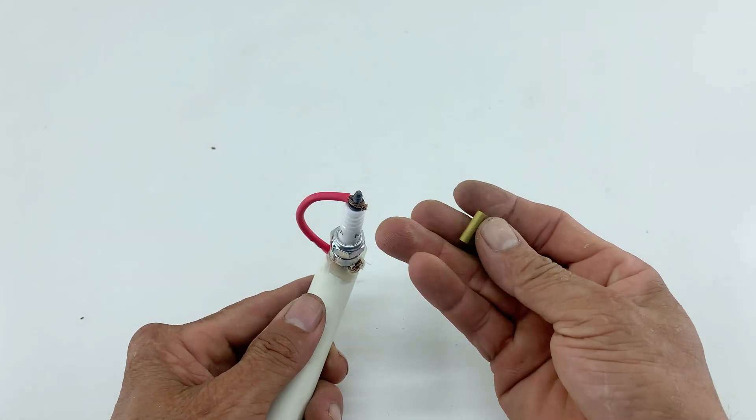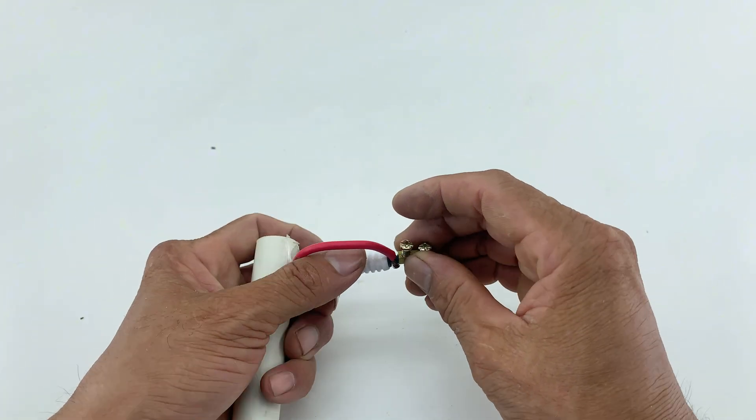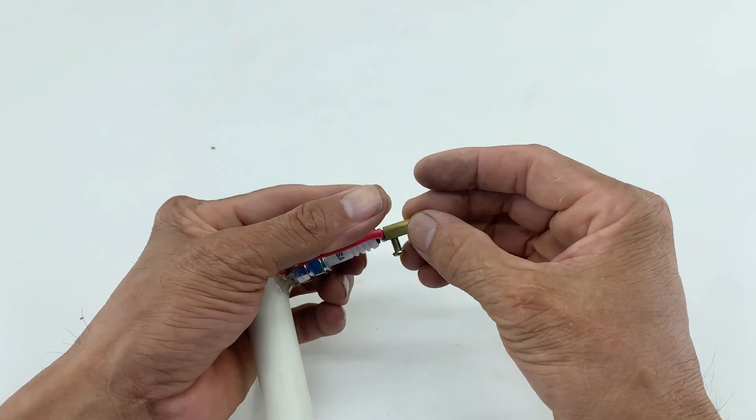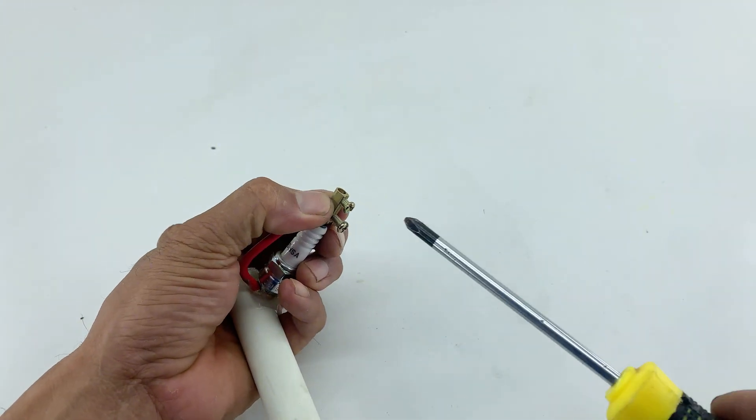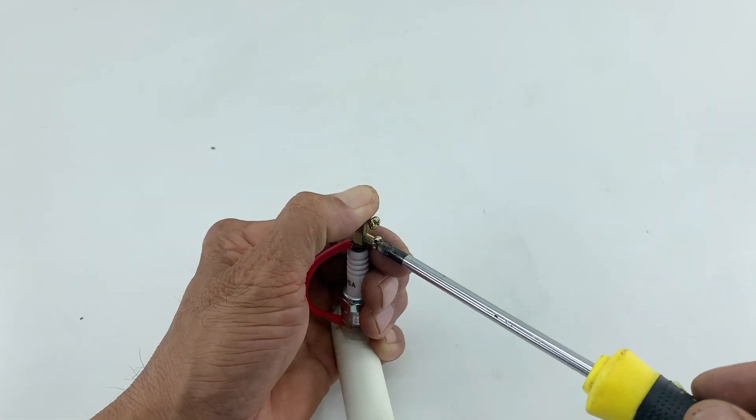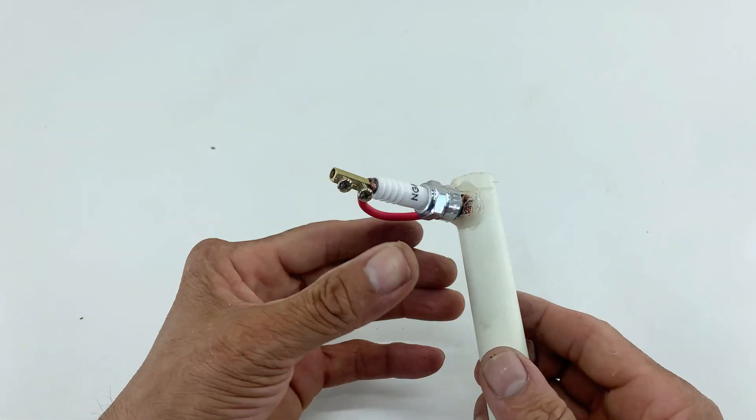Next, I'm taking a small brass connector. This connector will provide a solid point for attaching various interchangeable tips to our tool. I'm attaching this to the top of the spark plug's electrode using a screwdriver to tighten it firmly.